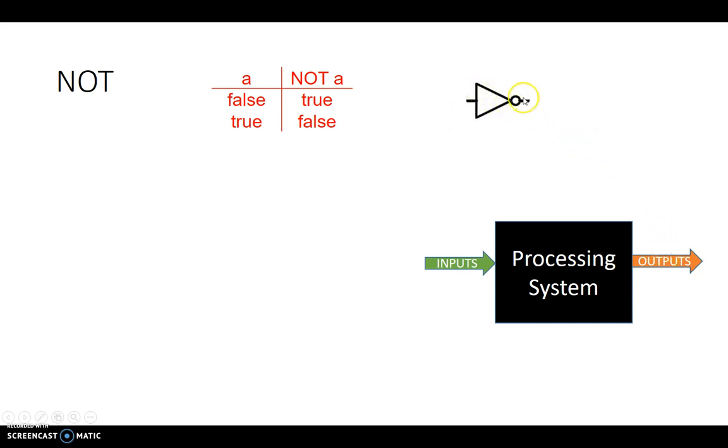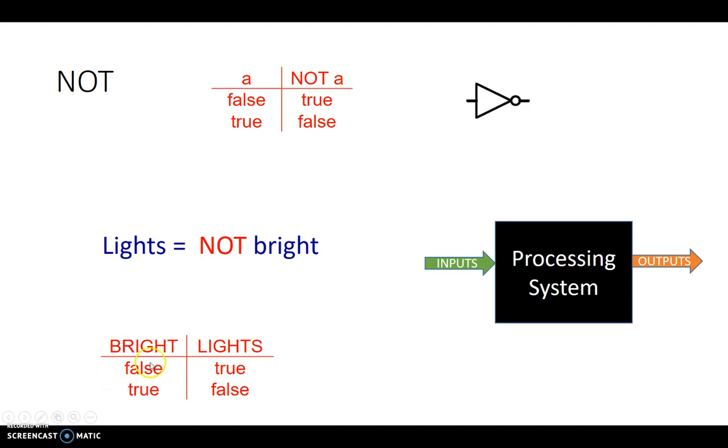That triangle followed by a small circle or bubble is called the NOT logic gate. Let's take this example of LIGHTS equals NOT BRIGHT. That basically corresponds to BRIGHT. When BRIGHT is FALSE, so it's NOT BRIGHT, BRIGHT is FALSE, it's NOT BRIGHT, LIGHTS will turn ON. When BRIGHT is TRUE, LIGHTS will turn OFF.